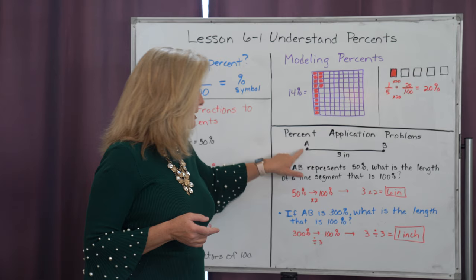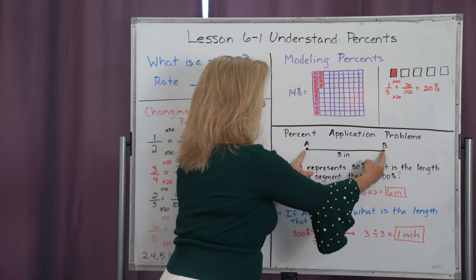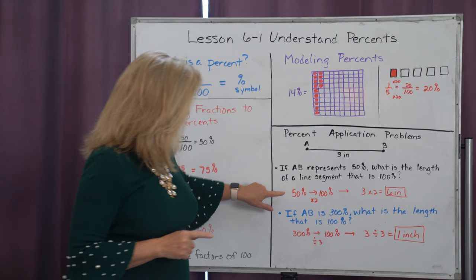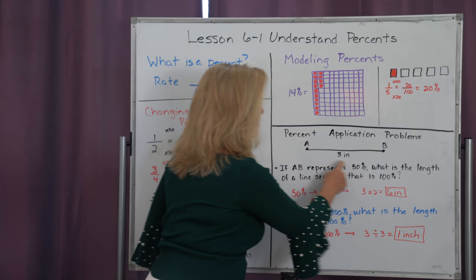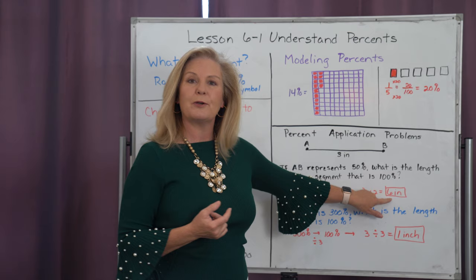Well, if line AB represents fifty percent, what is the length of a line segment that is a hundred percent? Well, fifty percent means half, so if I want to go to a hundred percent, I'm going to have to double that. The other way you can think of this is fifty percent to a hundred percent is times two. So whatever the length is, which is three inches, if I also multiply by two, that should tell me my hundred percent. So a hundred percent of this line segment would be six inches.